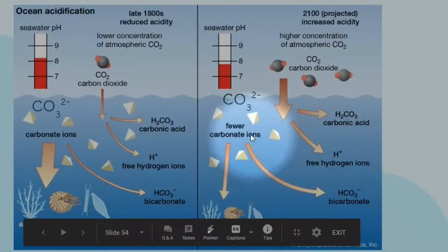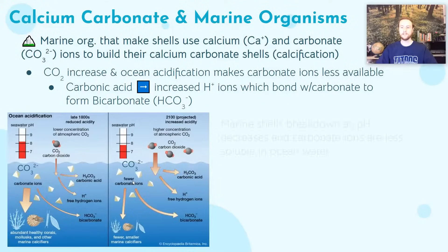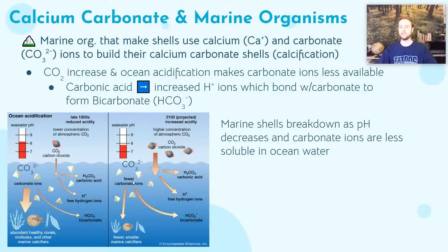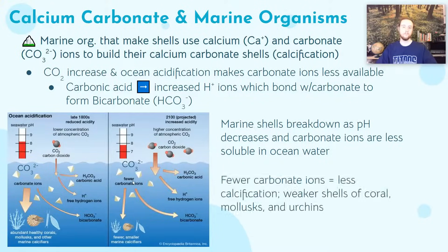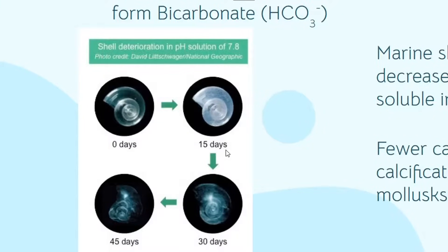We get an excess of bicarbonate as opposed to the more available carbonate when we had our higher pH, our less acidic oceans formerly. Marine shells are going to break down more easily and deteriorate as ocean pH decreases, because organisms just don't have the materials needed to maintain, re-fortify, and re-strengthen their shells. With fewer carbonate ions, there's less calcification — cracks and wear and tear can't be repaired. A NatGeo image illustrates this: when a calcium carbonate shell is placed in a pH 7.8 solution — the projected ocean pH by 2100 — by 45 days that shell has largely deteriorated due to reduced carbonate ion availability for the calcification process.